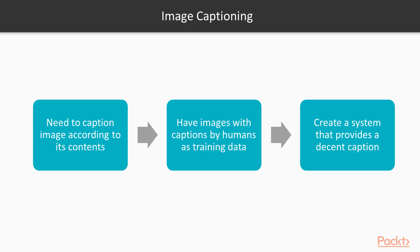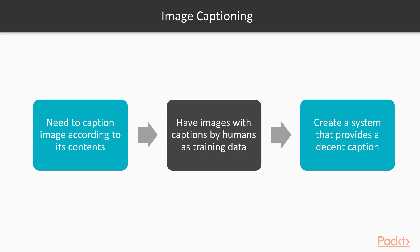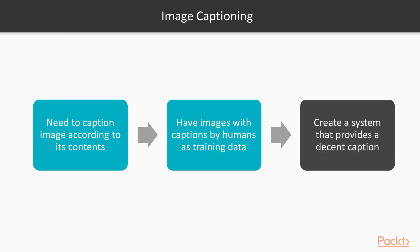Let's take an example that sits right in between text and image to understand this. Assume that we need to caption an image with respect to its contents. We have some images with captions provided by humans as training data, and using this, we need to create a system that can provide a decent caption for any new image not seen earlier by the model.